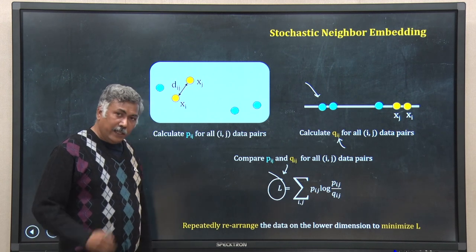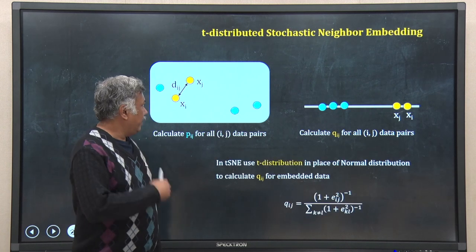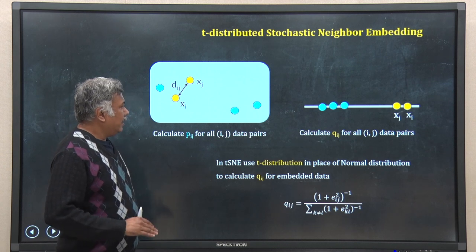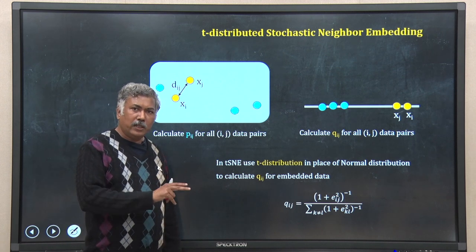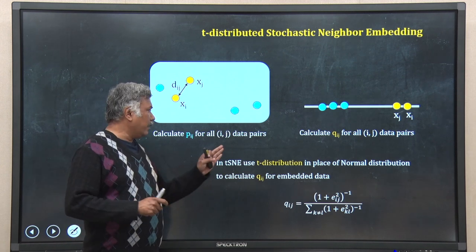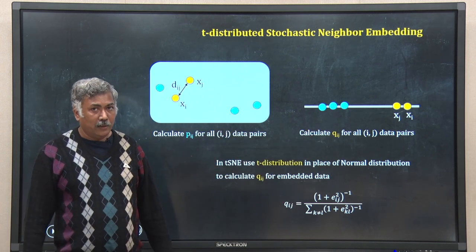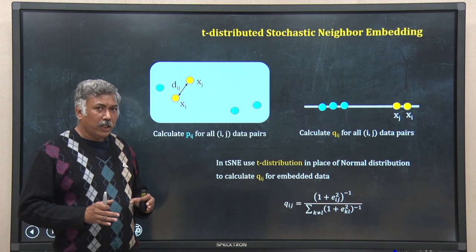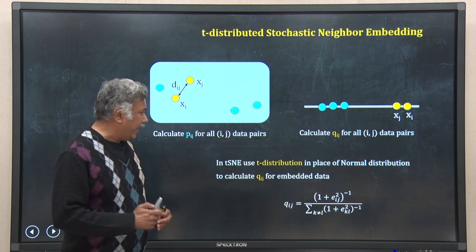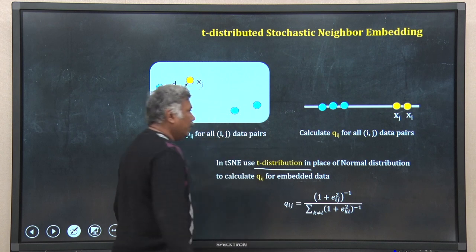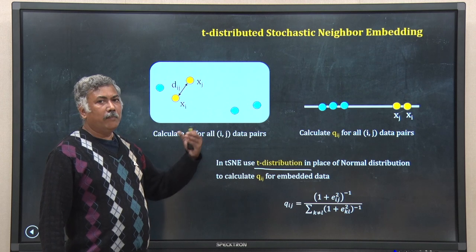That is all for SNE. Now we will move to the next version of SNE, which is called T-SNE. T-SNE will not use normal distribution. Remember, in SNE we use Gaussian or normal distribution for both the higher-dimensional data and for calculation of q_ij in the lower dimension. But in T-SNE, we will not use Gaussian distribution for the lower-dimension calculation.